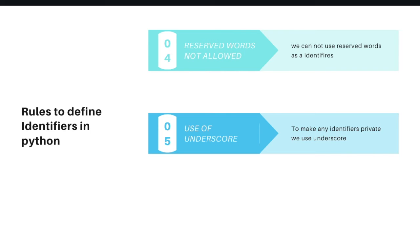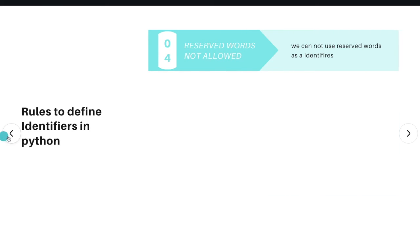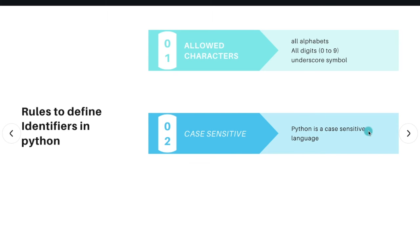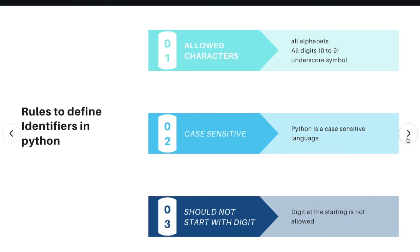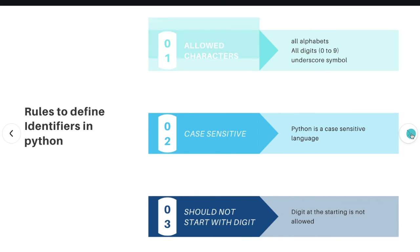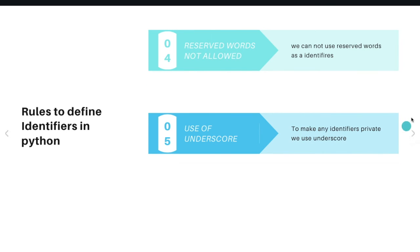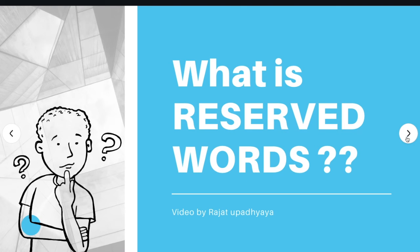Let me revise all five rules. First, allowed characters are all alphabets, all digits, and the underscore symbol. Second, Python is a case-sensitive language — different cases have different meanings. Third, an identifier should not start with a digit. Fourth, Python does not support reserve words as identifiers. Fifth, use an underscore to make an identifier private.